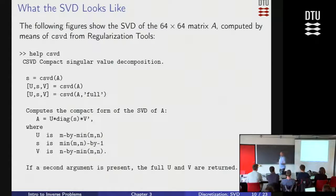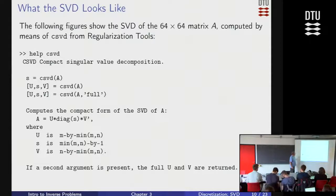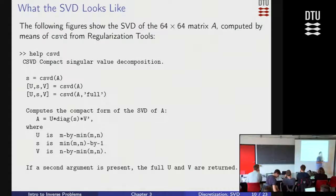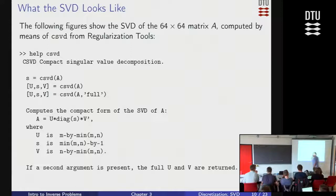So you have to get used to that. Everything is built on the output from my version of SVD called CSVD, which returns the two orthogonal matrices and then the vector with the singular values in the middle. The most common question I get from people needing help with Regularization Tools is because they used SVD instead of CSVD. Please use CSVD instead of SVD, because then everything else should work in the package.